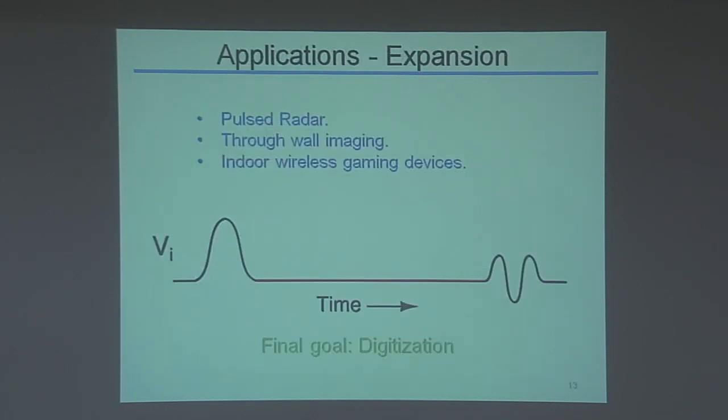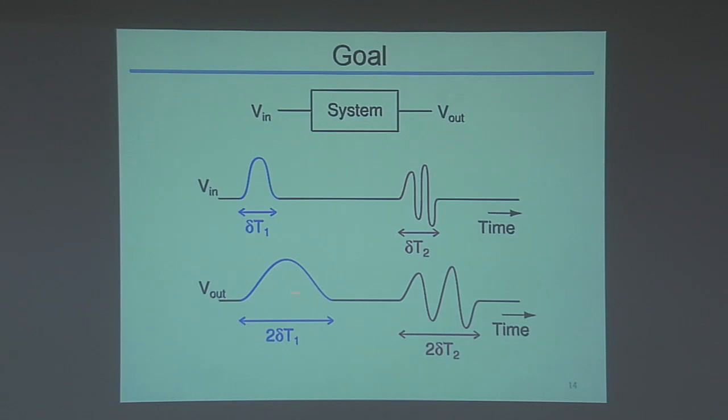Now there exist some applications which require sampling of these high frequency signals, which appear infrequently in time. And some of the examples that come to mind are radars or through-wall imaging or even some wireless gaming systems. So this high frequency pulse comes along, you have a long no activity period, then another pulse comes along and so on. So one of the way to ease the burden of the ADC is if in principle we can stretch these pulses in time, then you can in principle use a slower and a more accurate ADC with a lower sampling error to do the digitization.